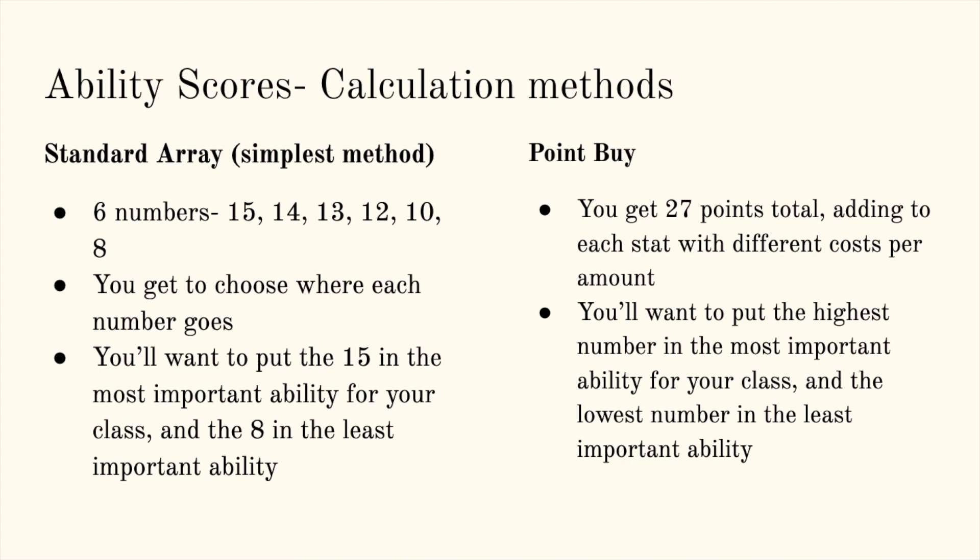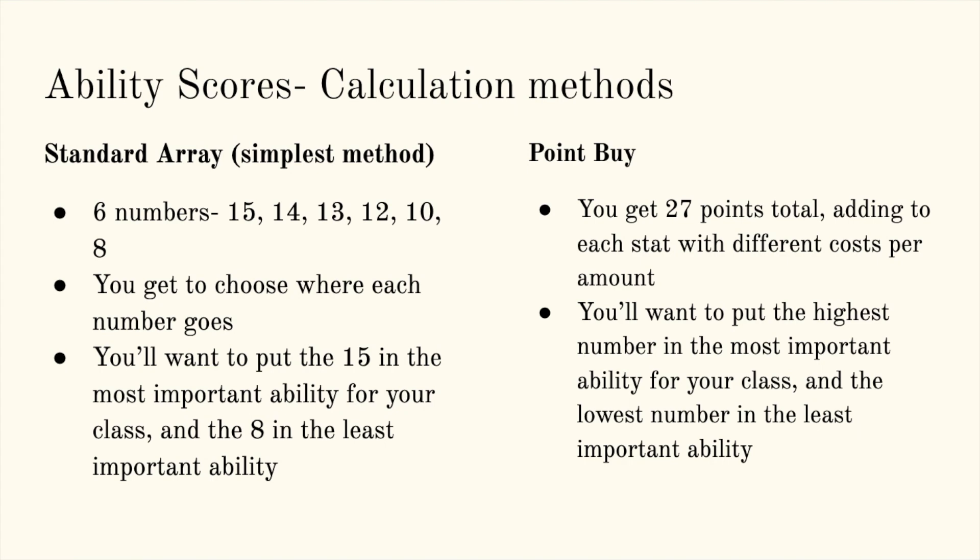Ability scores and how to calculate them. The simplest method is standard array. There are six numbers — 15, 14, 13, 12, 10, and 8 — and you get to choose where each number goes. You'll want to put the 15 in the most important ability for the class that you choose and the 8 in the least important ability. There is another method called point buy: you get 27 points total and you get to add points to each stat until you run out. I prefer standard array from these two, as it's the simplest and most balanced. There is also a manual way to roll stats, although I have found this to become very unbalanced when certain party members roll very high and others are more unlucky. Some dungeon masters will have you roll for abilities, but I do not recommend this.